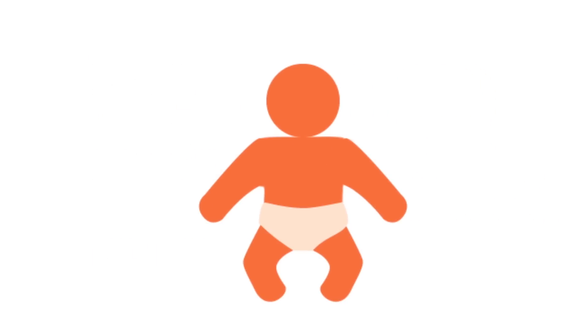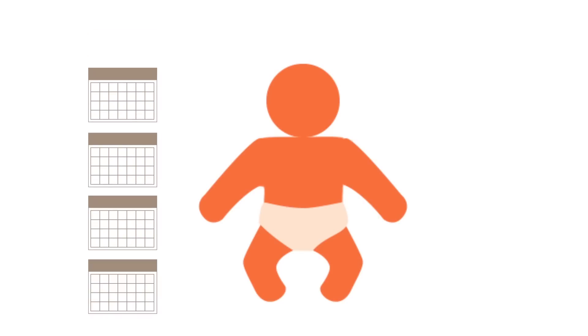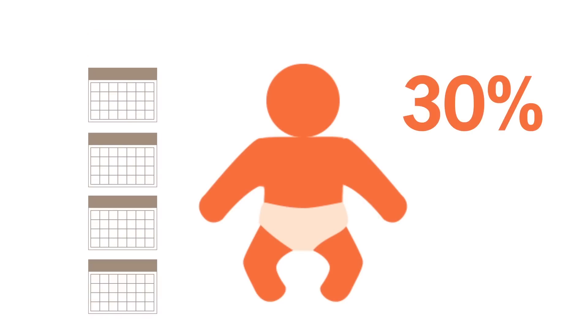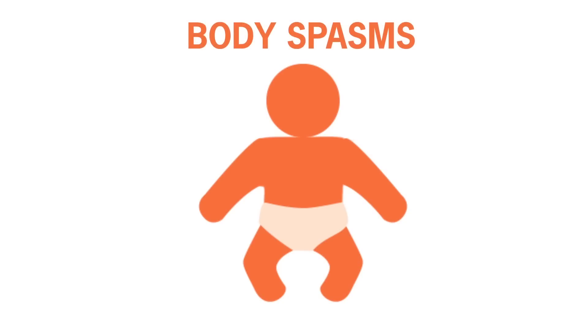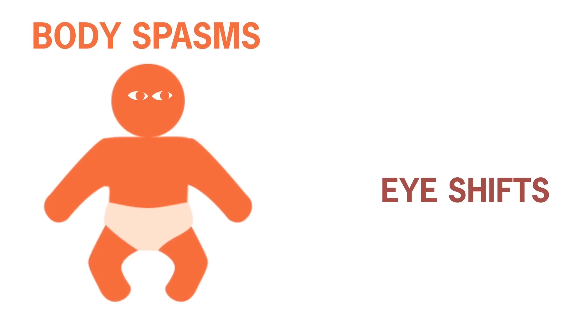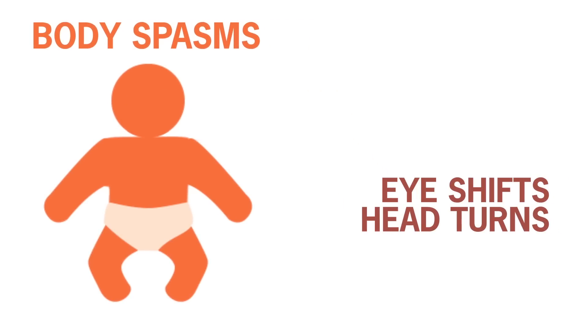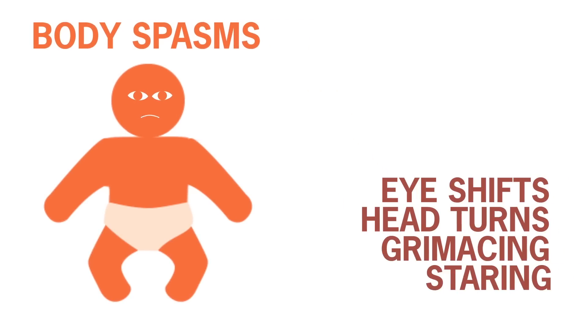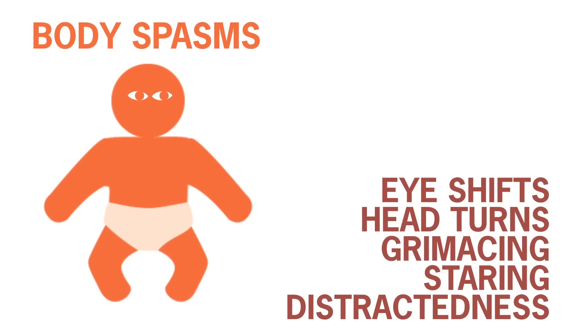Infantile spasms typically occur by 4 to 5 months of age and affect 30% of patients with TSC. These seizures are categorized by body spasms. Infants may exhibit eye shifts, head turns, grimacing, staring, or distractedness.